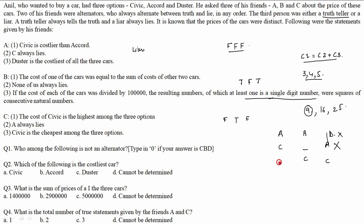C's first statement (false): Civic is not the highest. C's third statement (false): Civic is not the cheapest. So Civic must be in the middle position — meaning the order from costliest to cheapest is Accord, Civic, Duster. This gives prices of 25 lakhs, 16 lakhs, and 9 lakhs respectively. This is how the final formation is arrived at for Case 1 (A is liar).